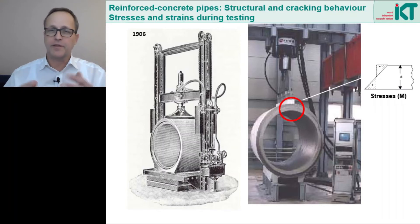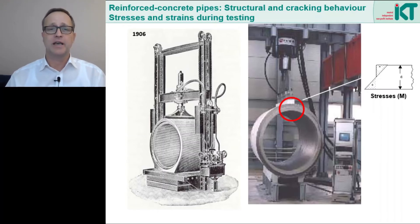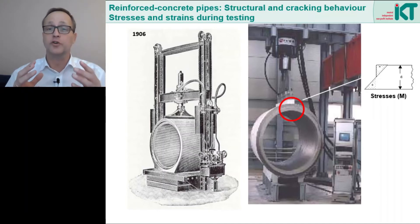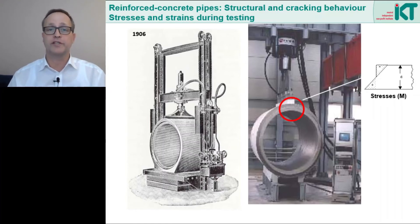There is another problem with the classic test. The crown pressure test produces the highest tensile stress and so the decisive first crack in the crown of the pipe, and that is where we have a pure bending moment. Pure bending moments lead to very large cracks. In reality, however, the pipes lie in the ground. The lateral earth pressure would not only cause pure bending stresses in the crown and invert, but also normal compressive stress, and this leads to significantly smaller cracks for the same stress level. The classic crown pressure test is therefore unsuitable for determining the crack behaviour of a reinforced concrete pipe.